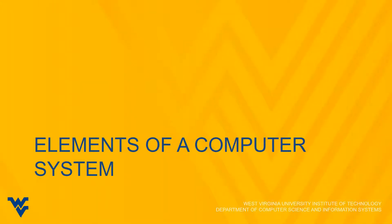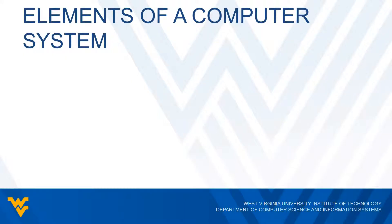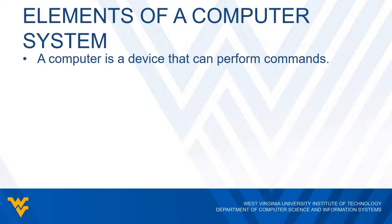Let's take a look at the basic elements of a computer system. The first question to ask is, what is a computer? It's simply a device that can perform commands. There are a variety of different types of commands that a computer can do these days, but for our purposes, we're just going to look at a couple of basic commands.